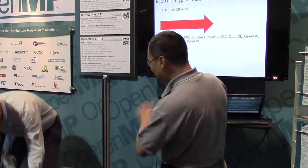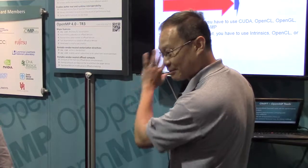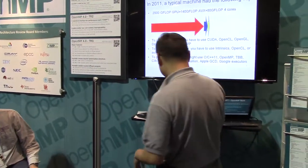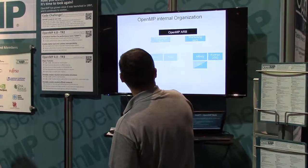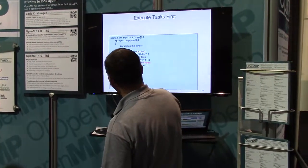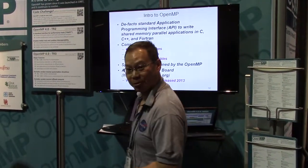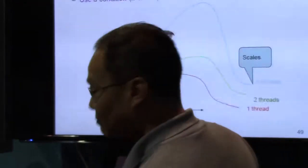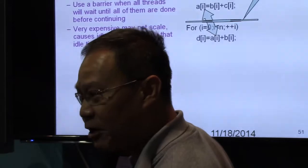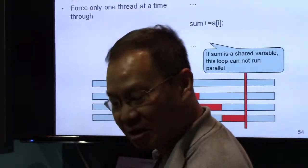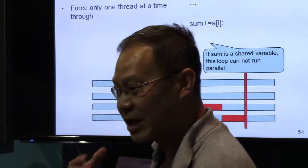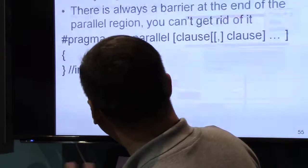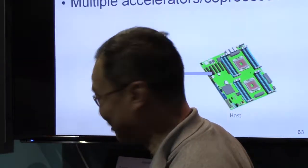I'm going to skip past much of this talk because much of it was given at ACCU in Bristol. It's probably still available on ACCU. It talks about a lot of different things — accelerators, affinity models, and things like that. So I wanted to focus for now on the vector model.